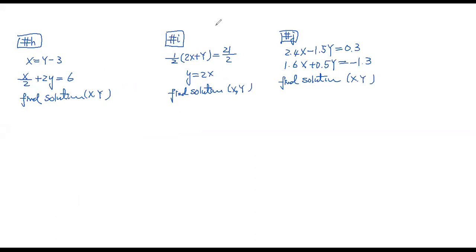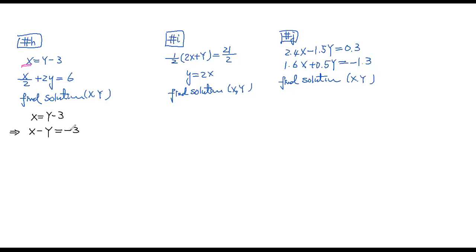You could use substitution here since x is already equal to y minus 3. But personally, I don't prefer that because it's very easy to make a mistake if you're not careful. What I would do instead is rewrite the equations. The first equation x = y - 3 becomes x minus y equals negative 3, by subtracting y from both sides.